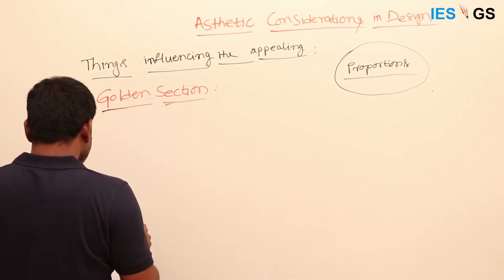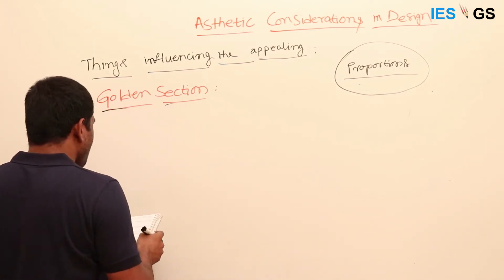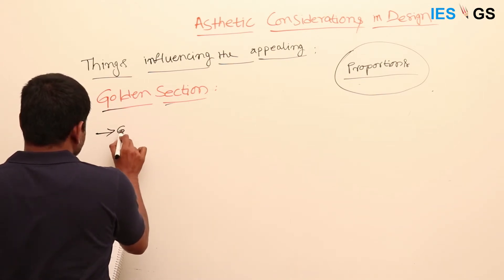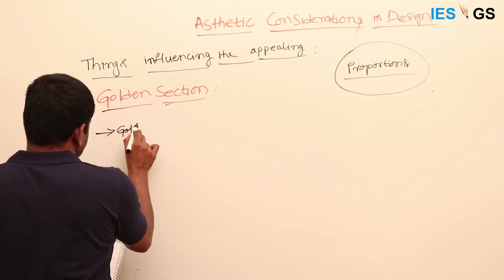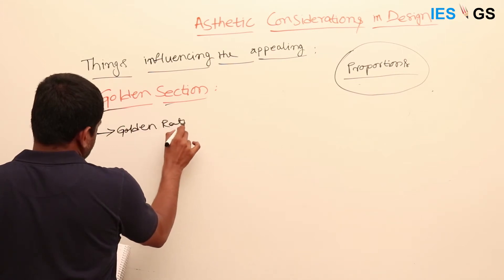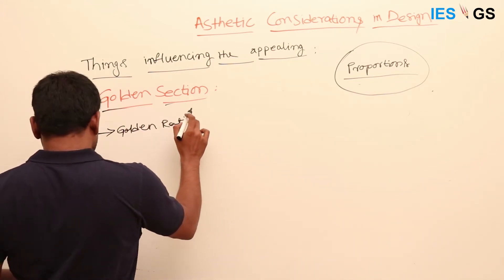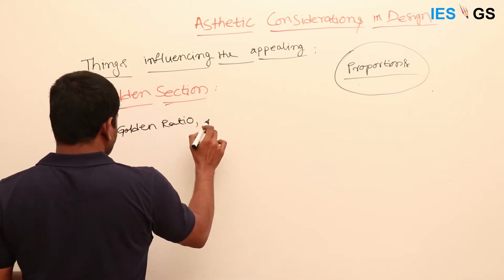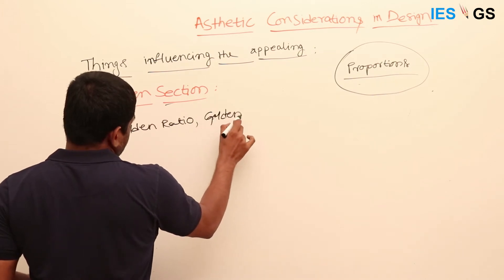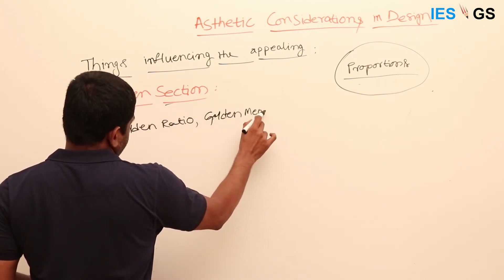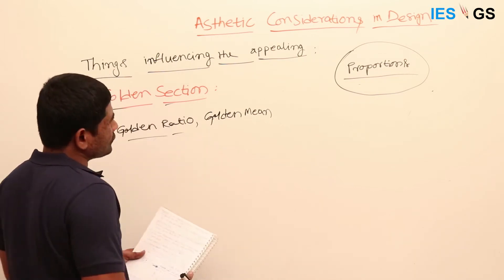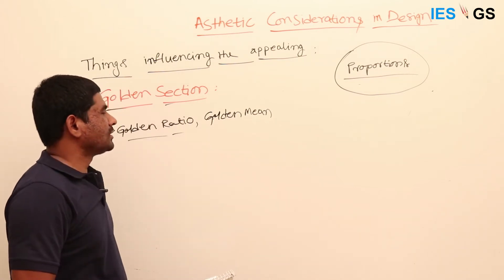The golden section is sometimes also called the golden ratio, and it is also called the golden mean. There are so many discussions about this golden ratio.